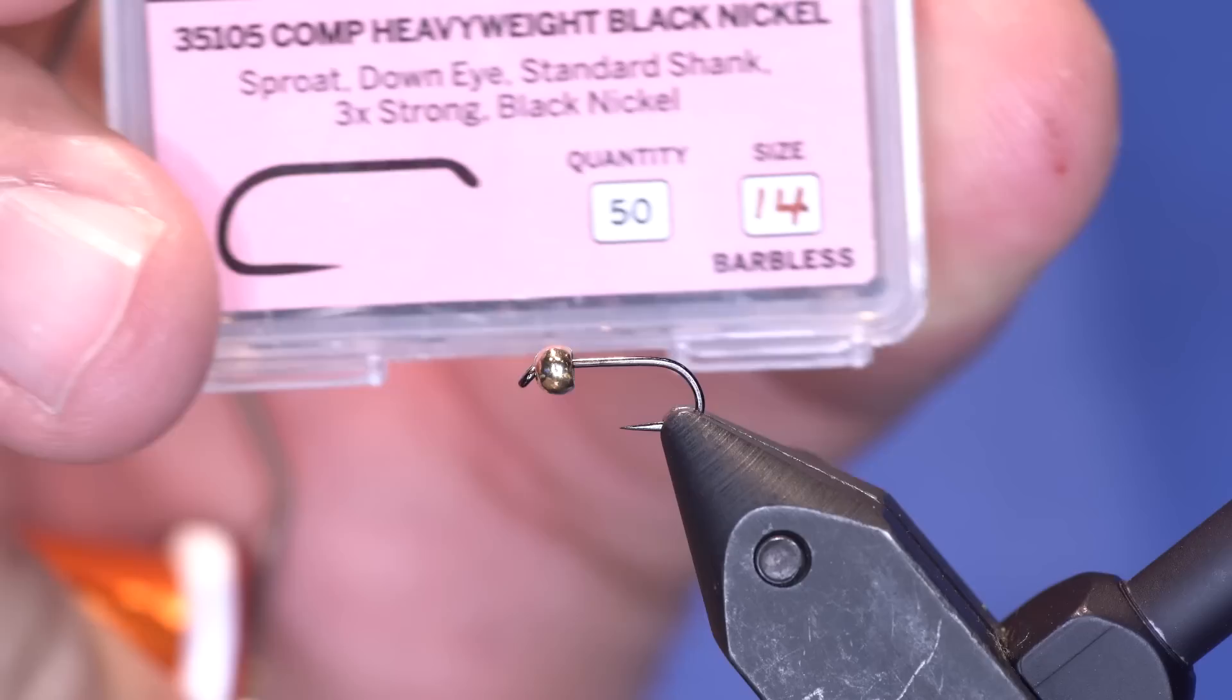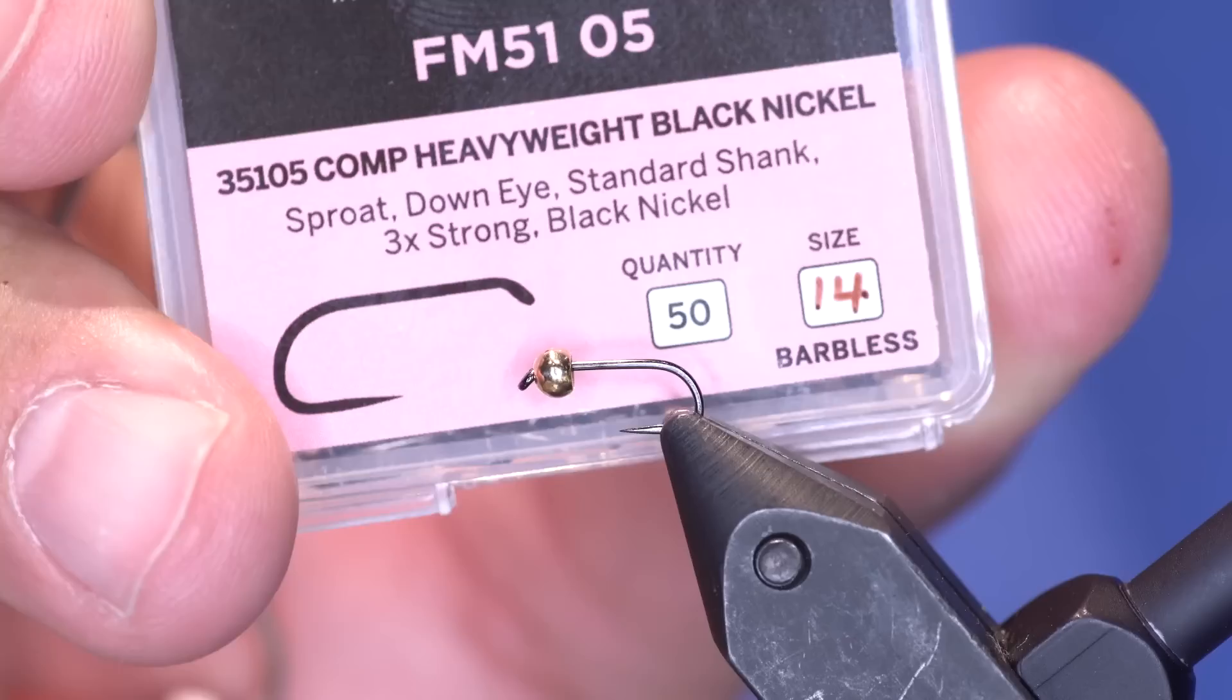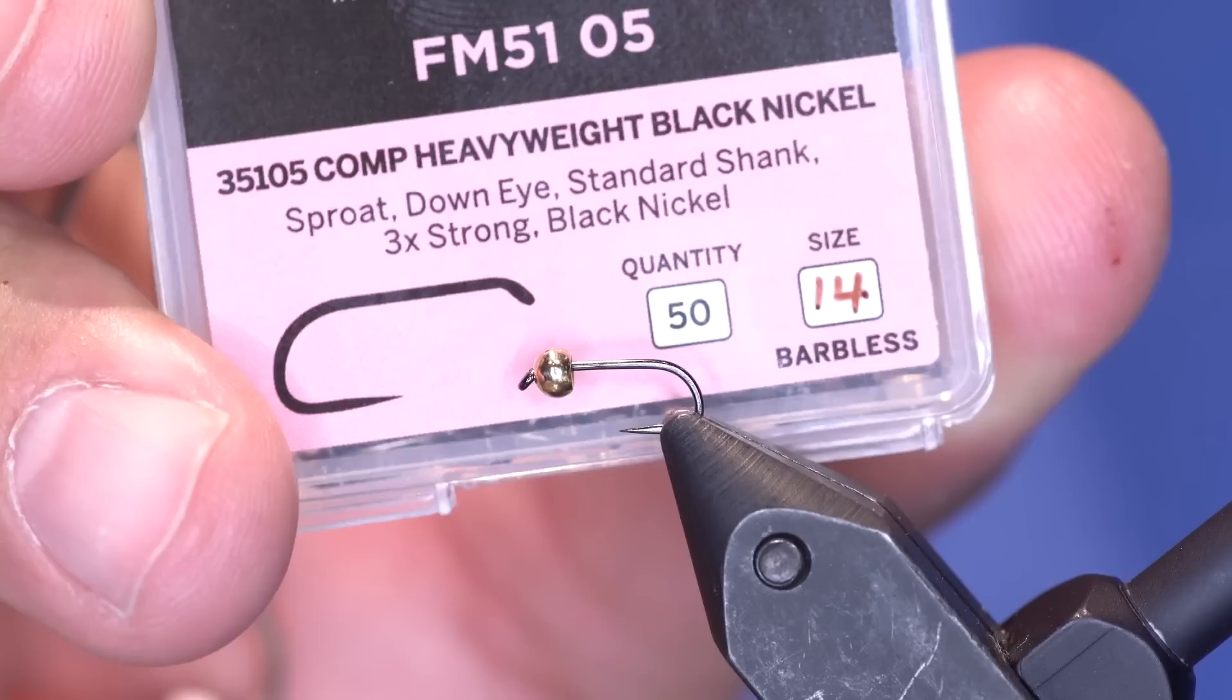But it's a really strong hook. They make them in I think down to 16, which would be really more like an 18. Anyway, because this is a soft hackle I'm not going to put any lead wire on it. I want to be able to wrap that hackle around a more thin area.